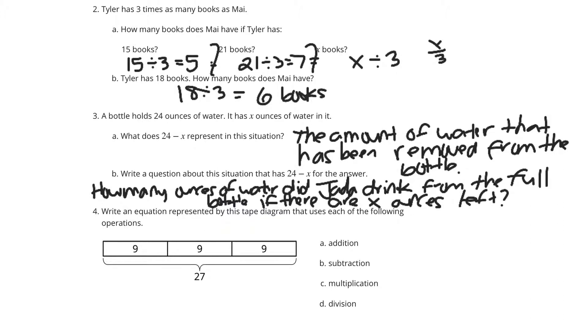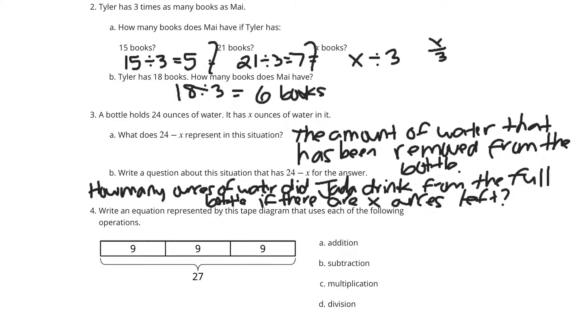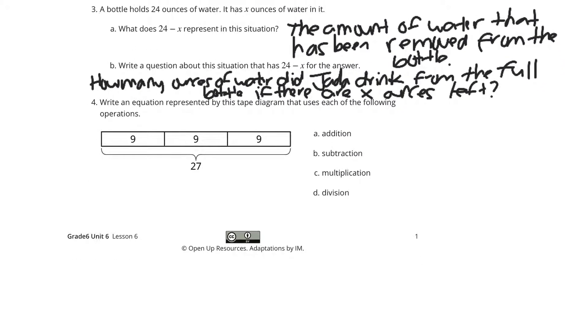Now write an equation in number 4 represented by this tape diagram that uses each of the following operations. We have 9, 9, 9, and 27. So for addition, one thing we could just write is, well I have those three 9's: 9 plus 9 plus 9 equals 27. That can be my addition equation.